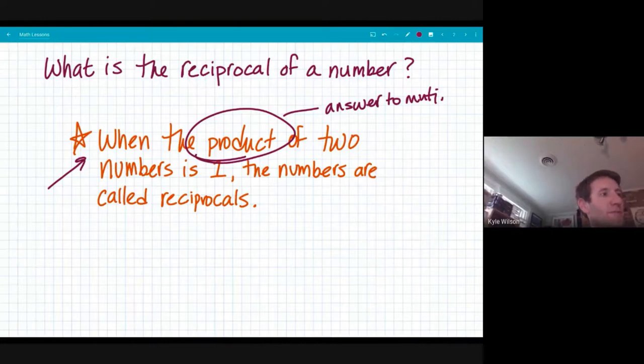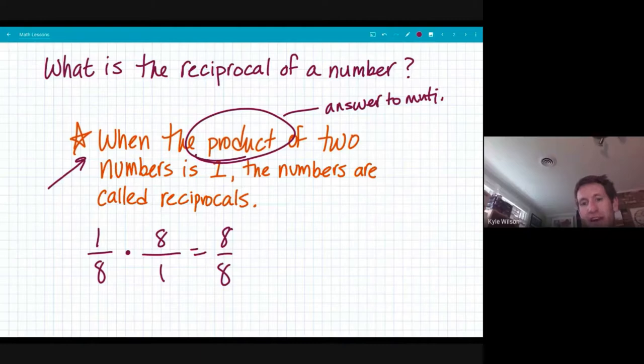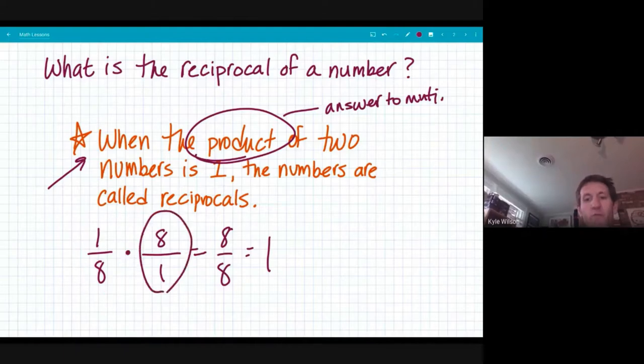So let me show you an example here. The reciprocal of something called, let's think about one eighth. And I'm going to multiply some fraction to get me the answer of one. And I know that I will have eight over one will give me an answer of eight eighths and eight eighths equals one. So the reciprocal of one eighth is eight over one or just eight.